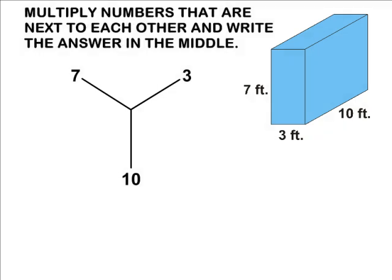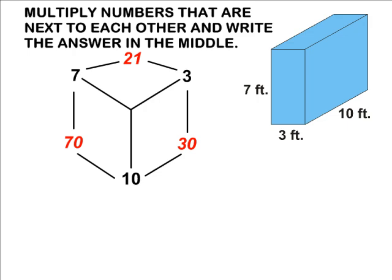Next, you should multiply the numbers that are next to each other and write the answer in the middle of those two numbers. For example, 3 times 10 is 30, and they are next to each other so after multiplying them write 30. 7 times 10 are next to each other and the product of 7 and 10 is 70, and 3 and 7 are next to each other so we multiply those to get a product of 21.